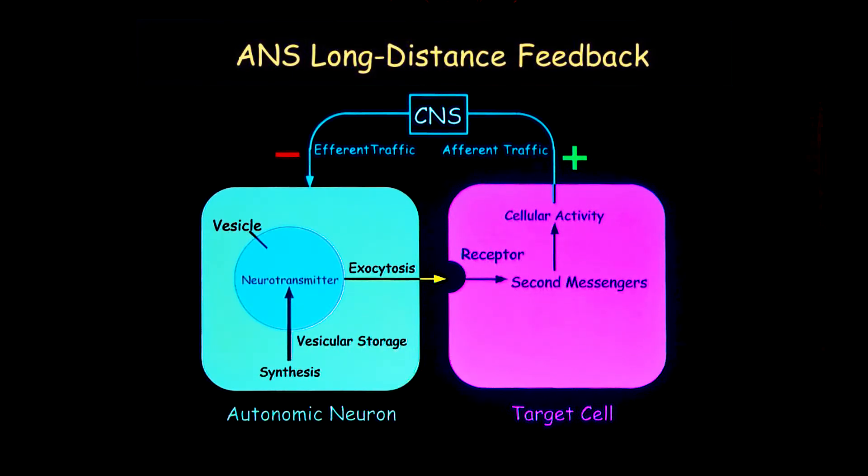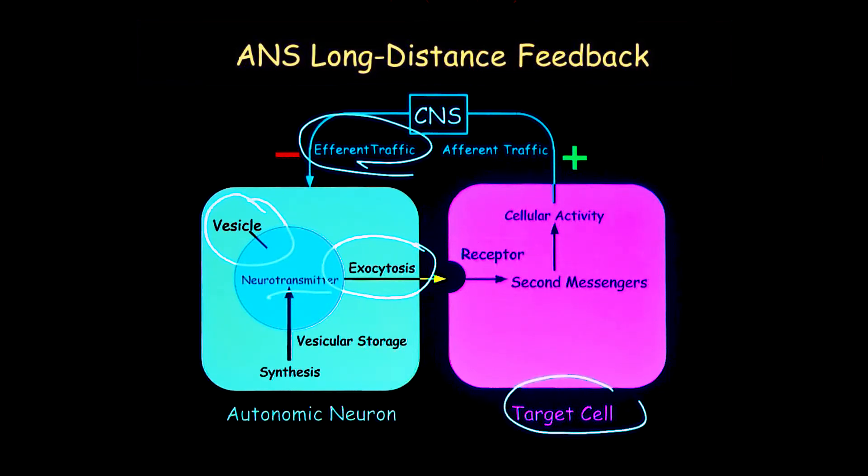In response to nerve traffic, there's release of a transmitter that's being stored in bubble-like spheres called vesicles. The chemical messenger reaches the target organ and causes cellular activity because of the changes.